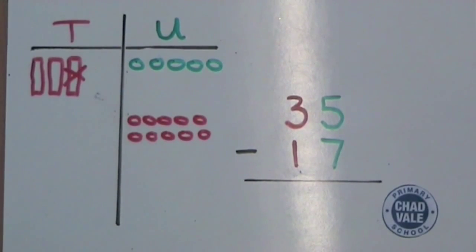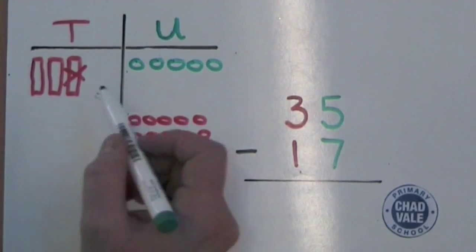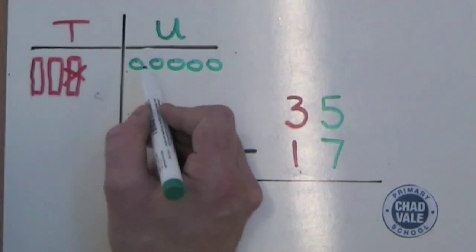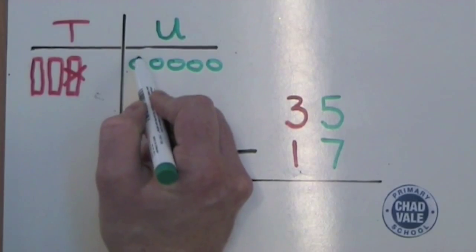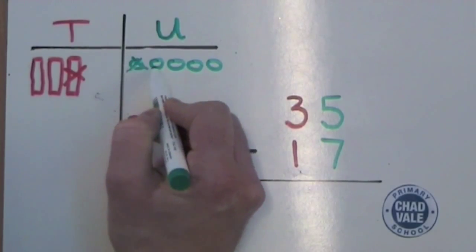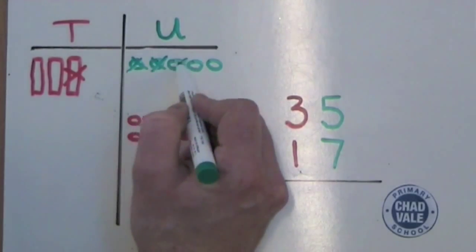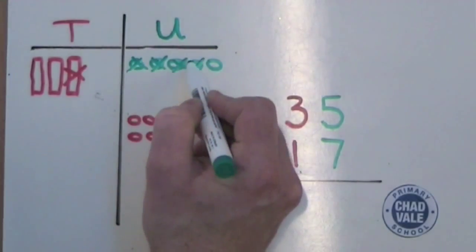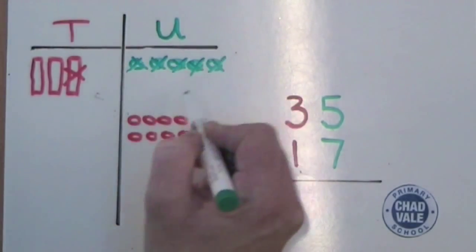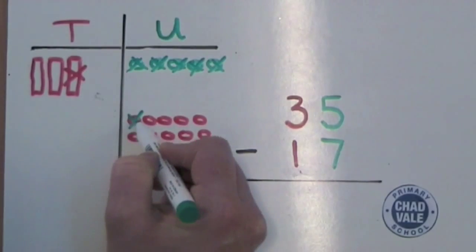Now we can subtract seven units and we cross these off as we do so: one, two, three, four, five, six, seven.